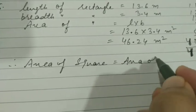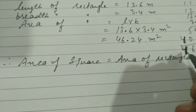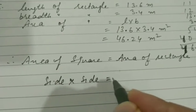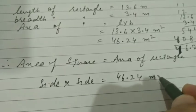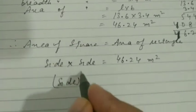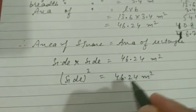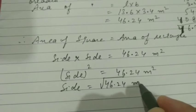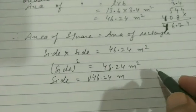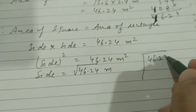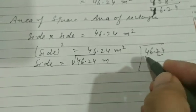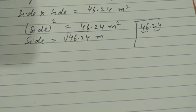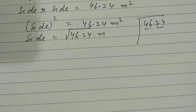Area of square equals area of rectangle, which is 46.24 square meters. The formula for area of a square is side × side, so side² = 46.24. We need to find the square root of 46.24. Since 6×6 = 36 and 7×7 = 49, the answer is between 6 and 7, closer to 46, so we try 6.something.